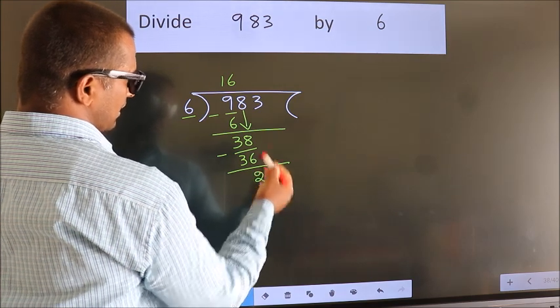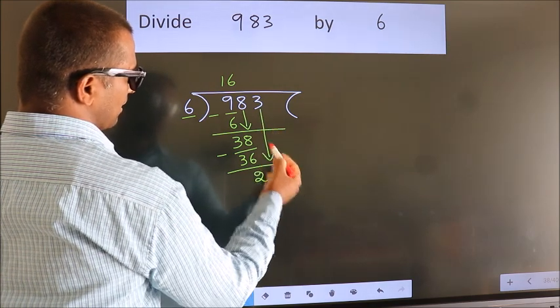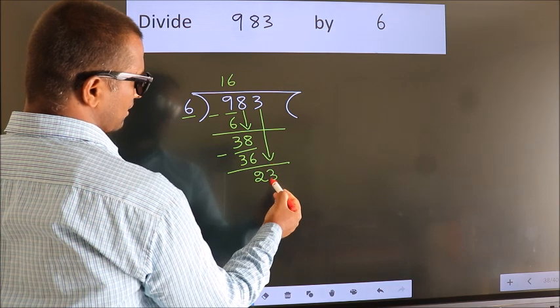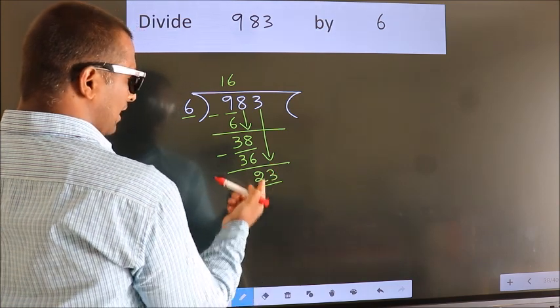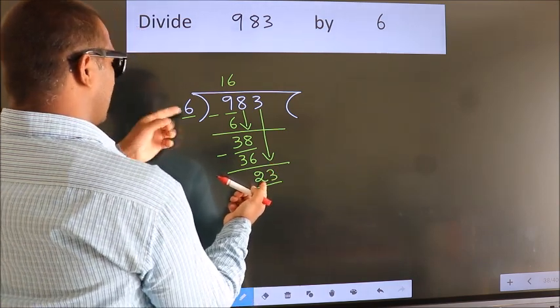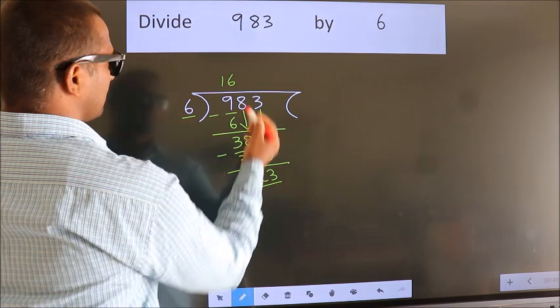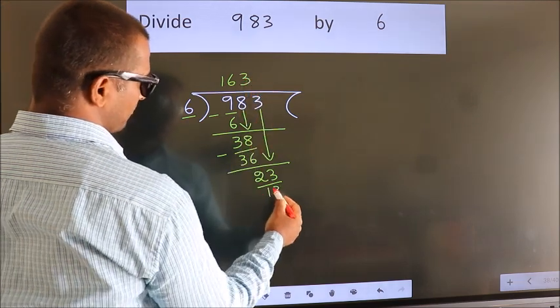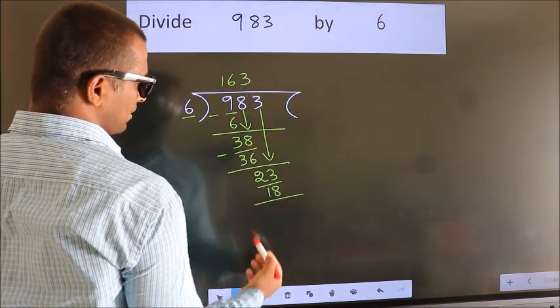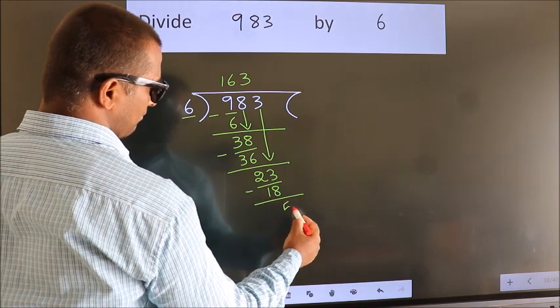After this, bring down the beside number. So, 3 down, giving us 23. A number close to 23 in the 6 table is 6 times 3, which is 18. Now we subtract and get 5.